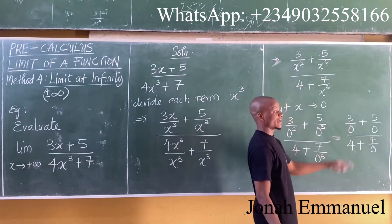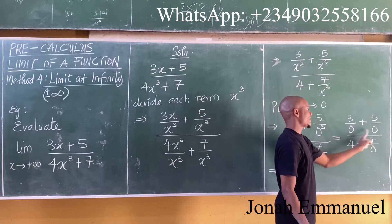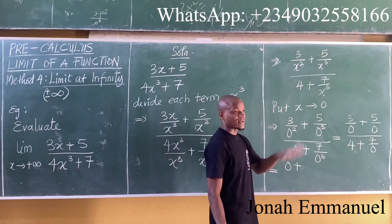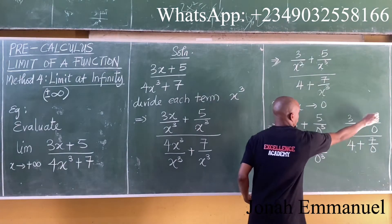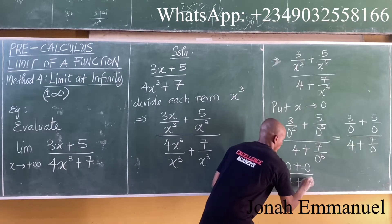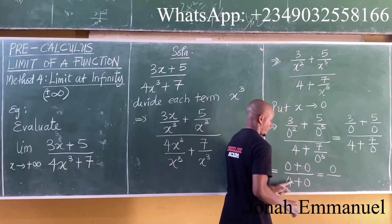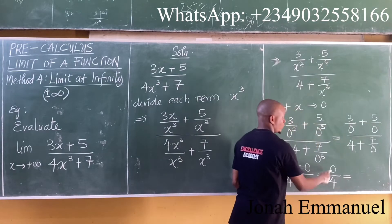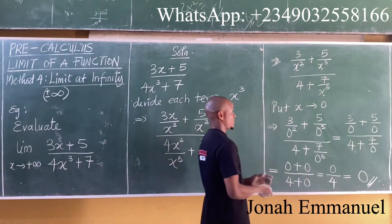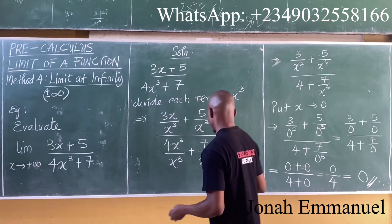Here is an undefined term — we will take it as 0. These terms are undefined because the denominator is 0, but we treat them as 0. So it becomes 0 plus 0, all over 4 plus 0, which is 4. So 0 divided by 4 gives an answer of 0. That means evaluating this limit gives us 0.